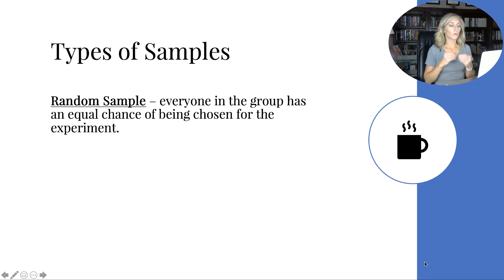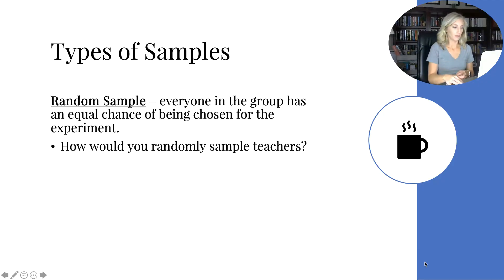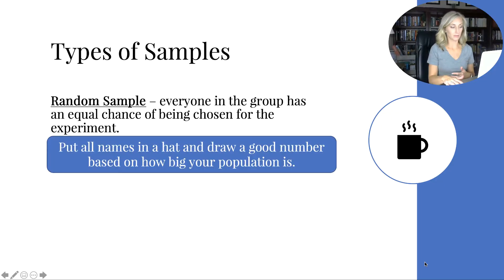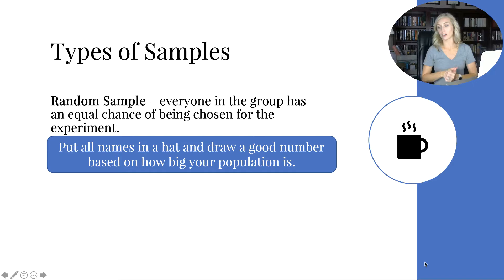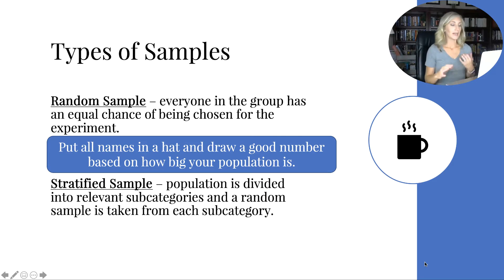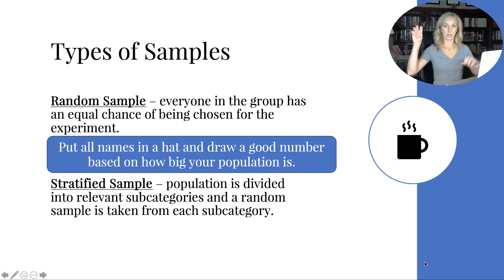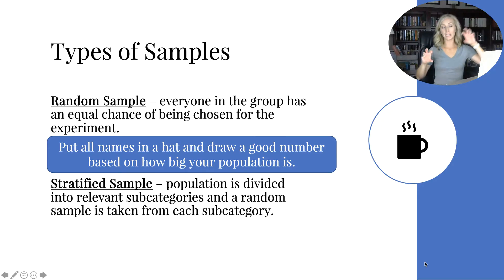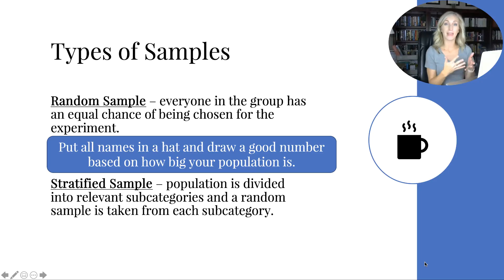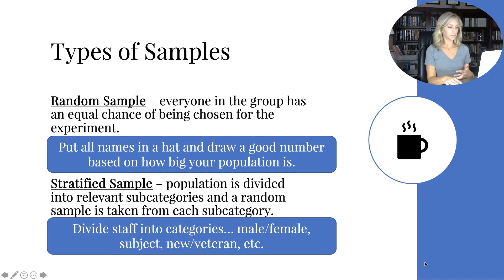To obtain a representative sample, it needs to be random. A random sample is when everyone in the population has an equal chance of being chosen for the experiment. You might put all the names in a hat and draw enough based on your population size — say 50 or 25 out of 200 teachers. There's also a stratified sample, where the population is divided into relevant sub-categories like social studies, English, math, science, art, and phys ed, and then a random sample is taken from each sub-category.